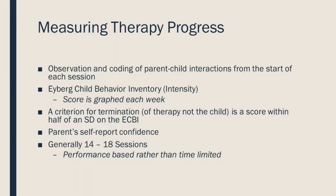Parents might rate a behavior as a two but not really see it as a problem. Whereas another behavior like throwing objects might be rated as a five and they do see it as a problem. This gives parents a chance to rate the problem behaviors, the intensity of those behaviors, and whether or not they think they're a problem.